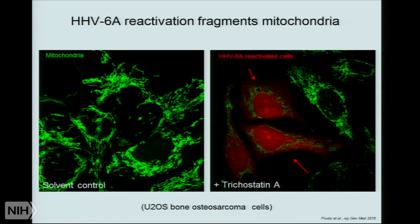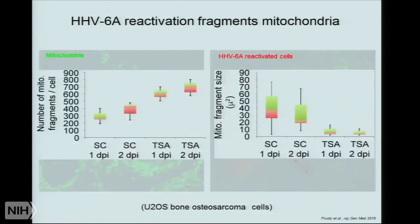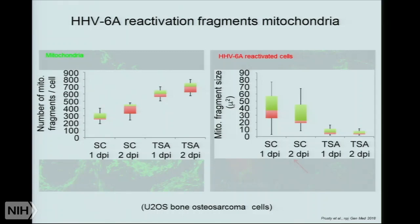This is in bone osteosarcoma cells. We then developed mathematical algorithms to count the mitochondria and measure their size. After drug treatment, the mitochondrial fragment number increases because the mitochondria change from longer to smaller structures. At the same time, the mitochondrial fragment size decreases because the mitochondria are smaller. So this is a quantitative measure for us to know that the mitochondria is changing its structure.